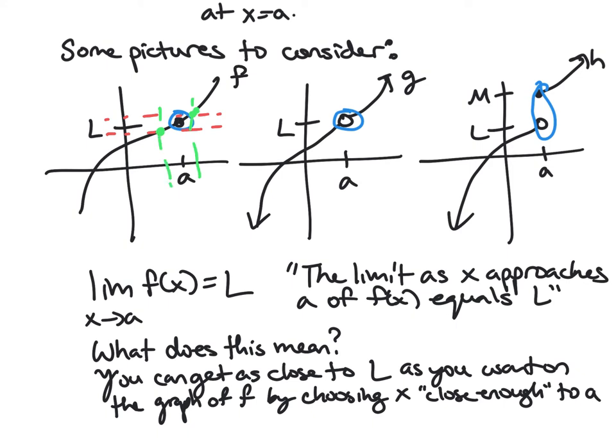If I want to get a little closer to L, then I'm gonna have to get a little bit closer to a. Okay, that's the idea. So in this case, if I'm really close to a on my graph, I'm also very close to L. It just passes right through it.